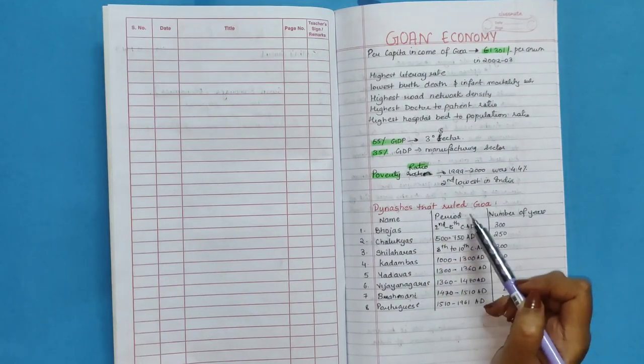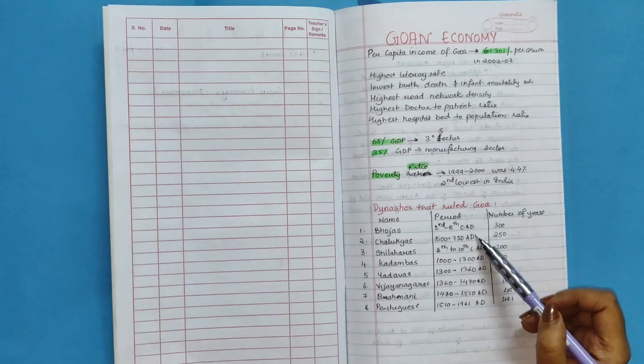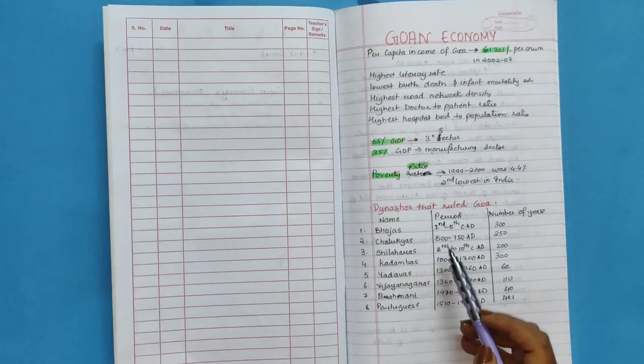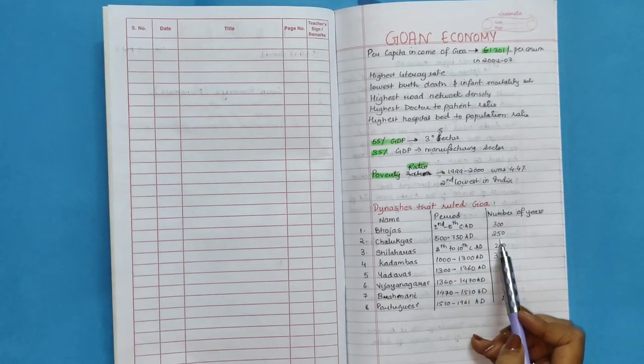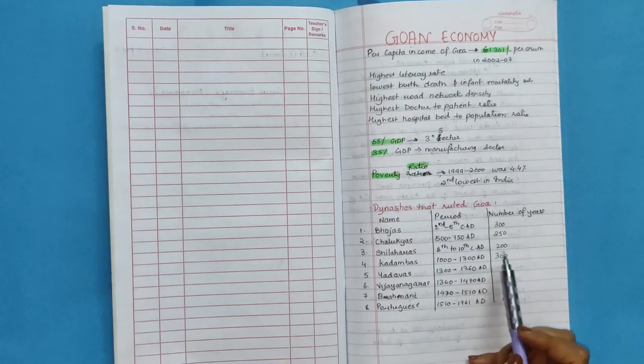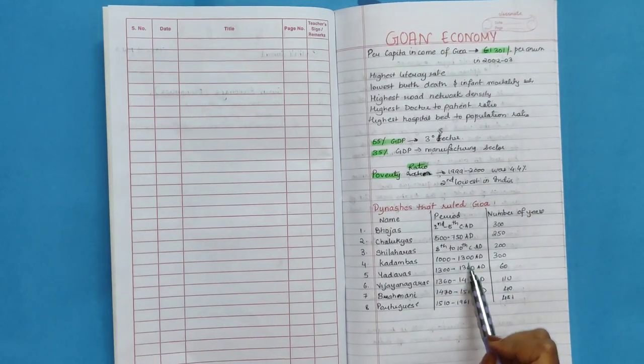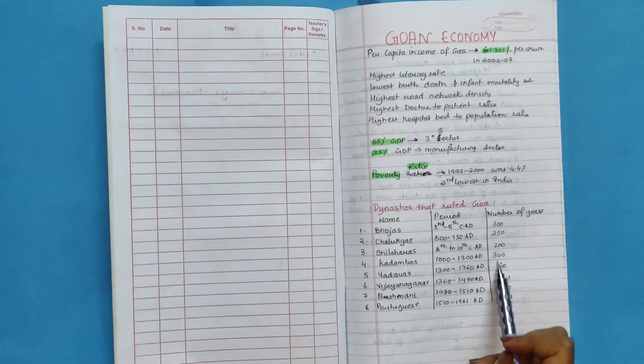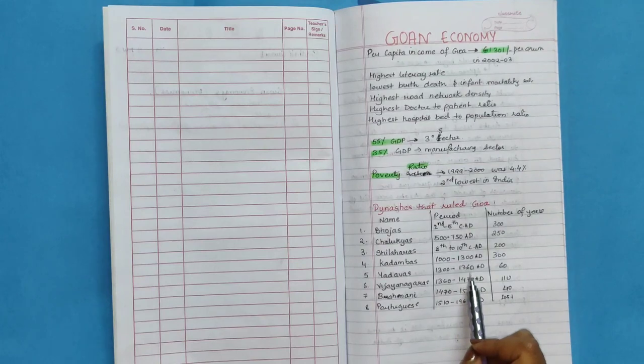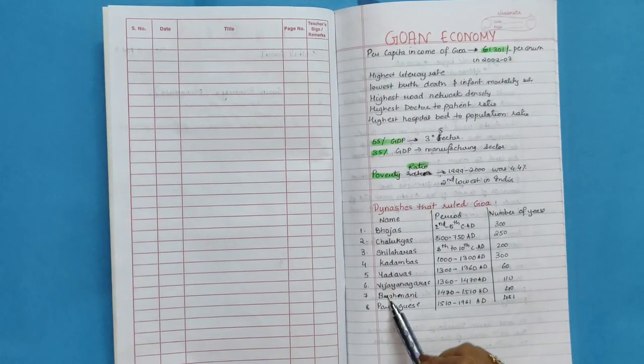Dynasties that ruled Goa. Bojas was second to fifth century AD, 300 years. Chalukyas were 500 to 750 AD, 250 years. Shilaras were 8th to 10th century AD, 200 years. Kadambas 1000 to 1300 AD, 300 years. Yadavas 1300 to 1360 AD, 60 years. Vijayanagara 1360 to 1470 AD.